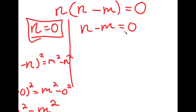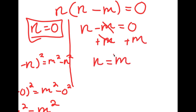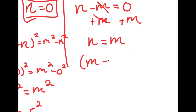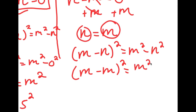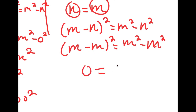For the second case, I have n minus m equals 0. If I add m on both sides, I get n is equal to m. Putting this back into my original equation, m minus n squared is equal to m squared minus n squared. Rewriting n as m, I have m minus m squared is equal to m squared minus m squared. m minus m is 0, so I have 0 is equal to 0, meaning both sides equal 0.